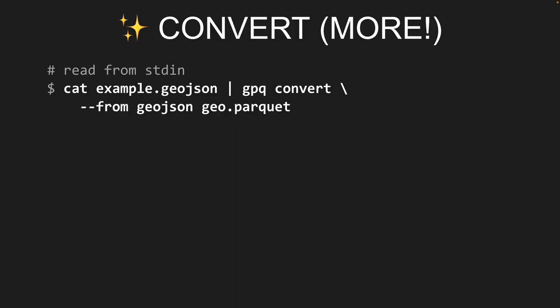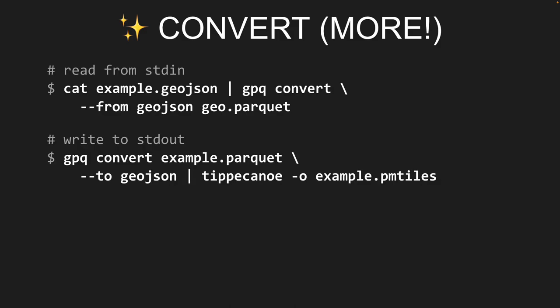There's more: instead of specifying files on your file system, you can pipe from standard input to gpq convert. This takes GeoJSON, pipes it to gpq convert, and creates GeoParquet. You can do the same with standard out — so if you have a tool like Tippecanoe that takes GeoJSON from standard input, you can pipe gpq convert with a GeoParquet file to Tippecanoe to create a PMTiles dataset.